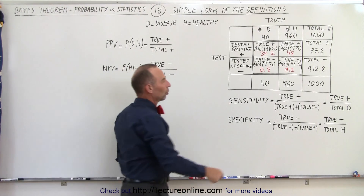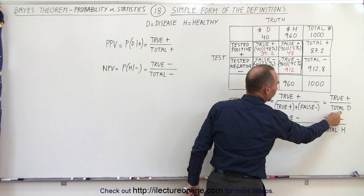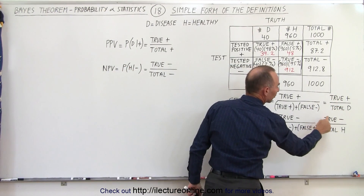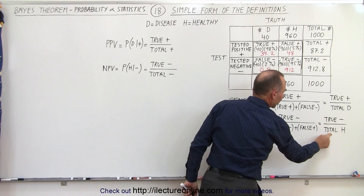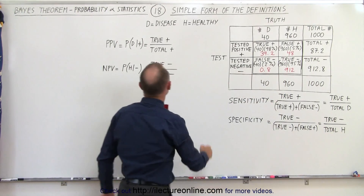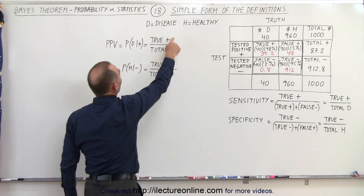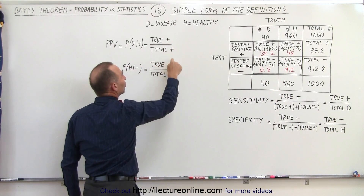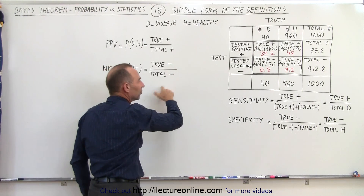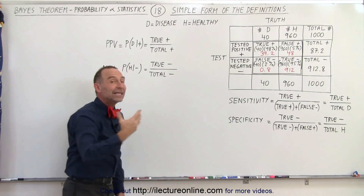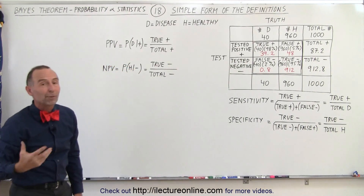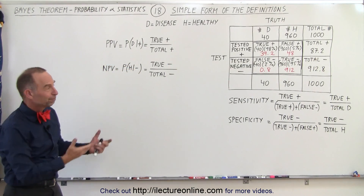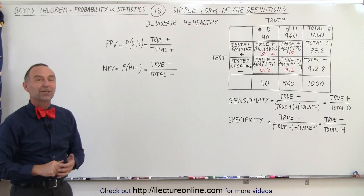To summarize: true positives divided by the total with the condition; true negatives divided by the total that are healthy; true positives divided by the total positives; true negatives divided by the total negatives. That might be the easiest way to remember those four definitions. And that's how it's done.